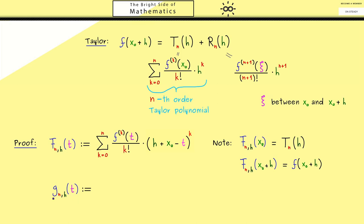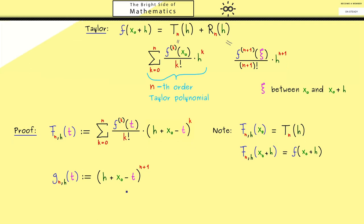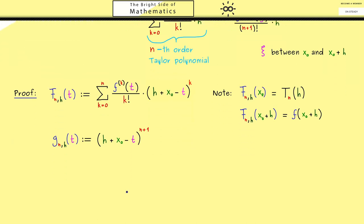We call the variable t as well and put n and h into the index of g. This function should help us with the remainder term, so we need the power n+1 — we put h plus x0 minus t inside. With the two functions F and g we can now apply the generalized mean value theorem, which will give us the intermediate point xi.